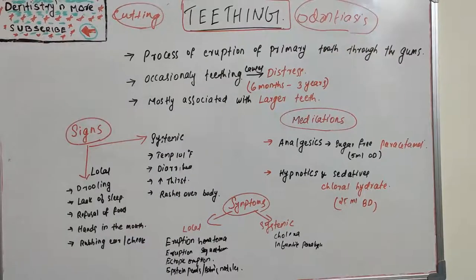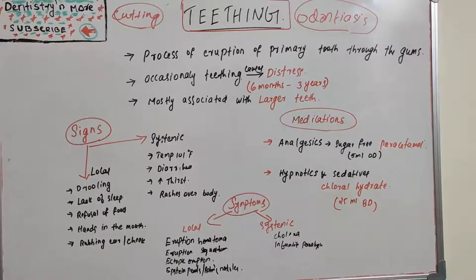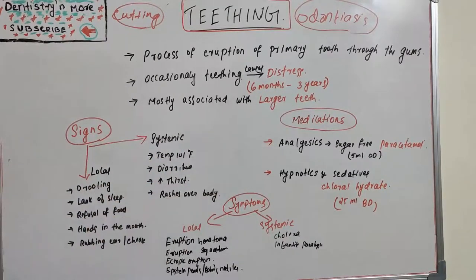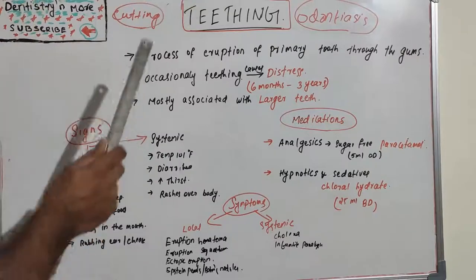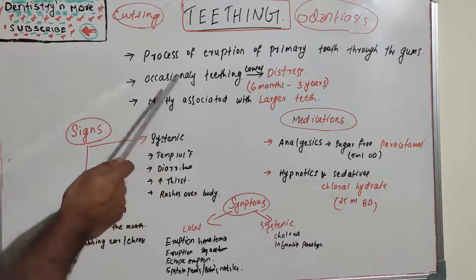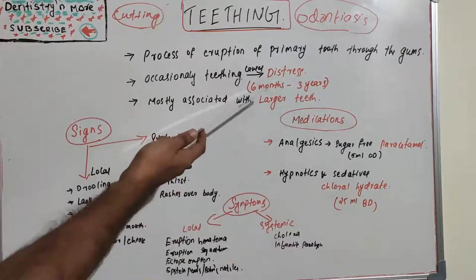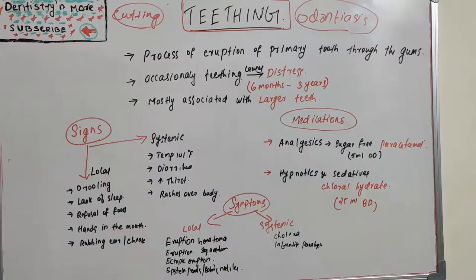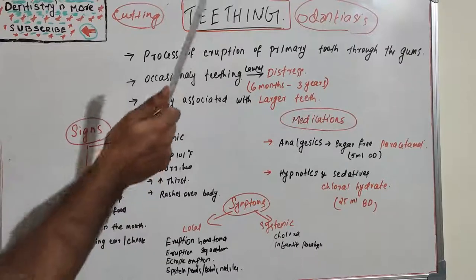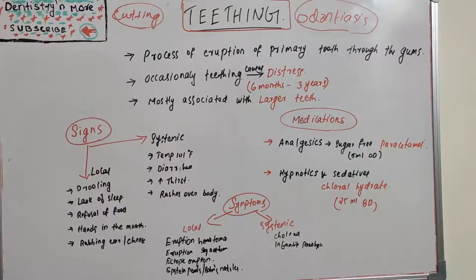In most cases, eruption of primary teeth causes no distress to the child or parent. But sometimes the process causes local irritation which may interfere with the child's sleep. The small primary incisors usually erupt without any difficulty, but difficult teething is most commonly associated with larger teeth. The eruption of primary teeth through the gums occurs between six months to three years.